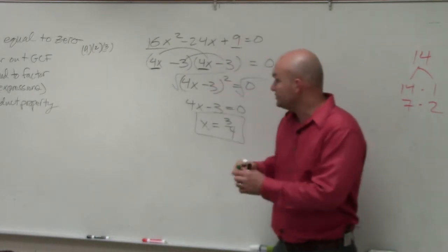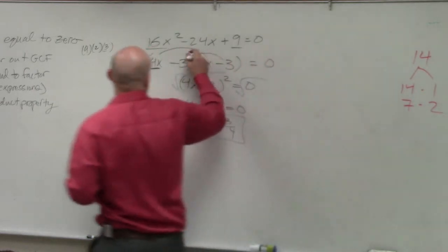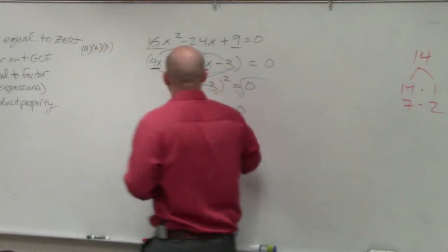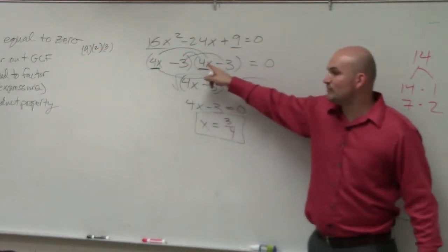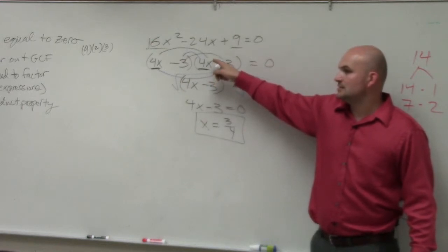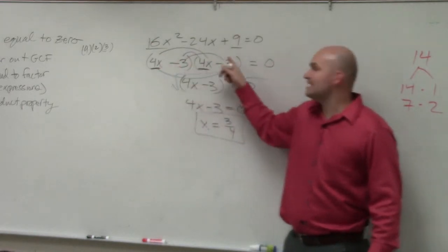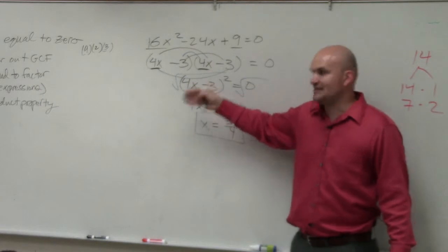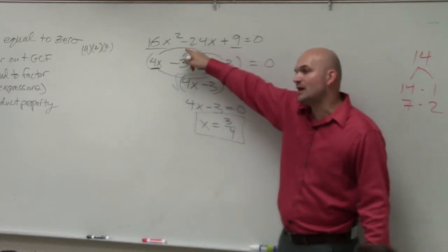Now, remember, what we're going to do to find the middle terms, you've got to multiply the inner and the outer. So negative 3 times 4x is negative 12x. 4x times negative 3 is negative 12x. Negative 12x plus negative 12x is negative 24x.